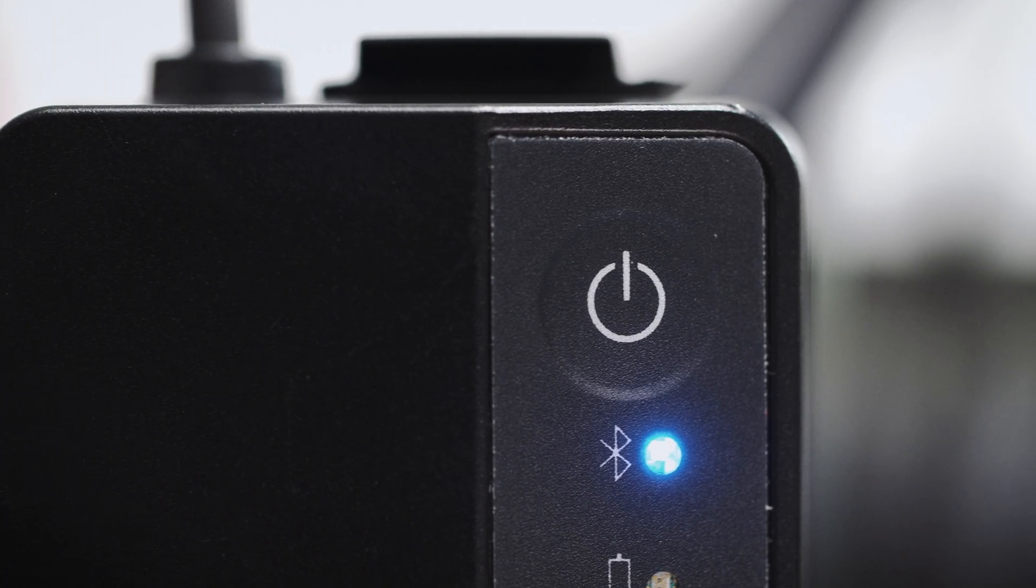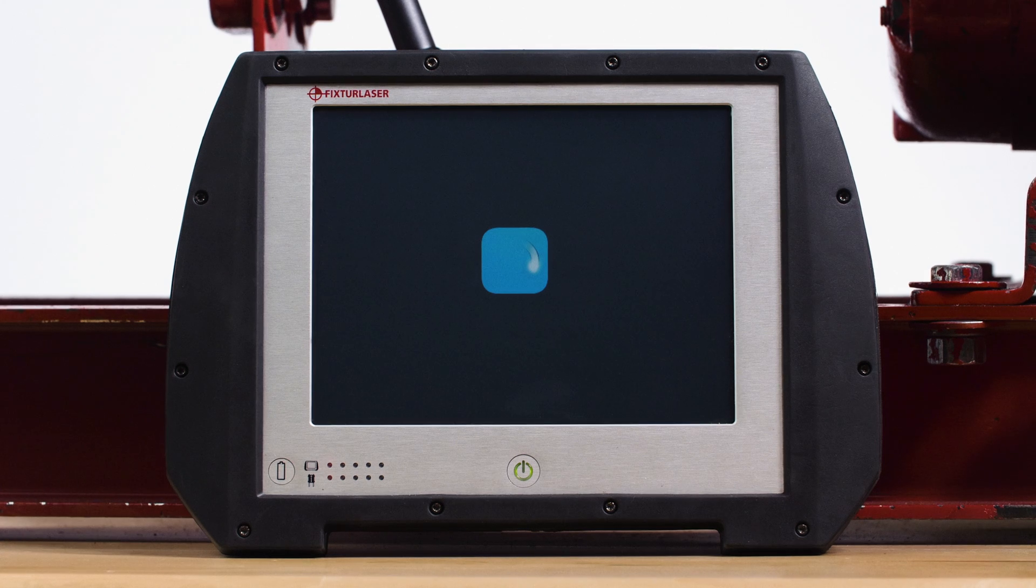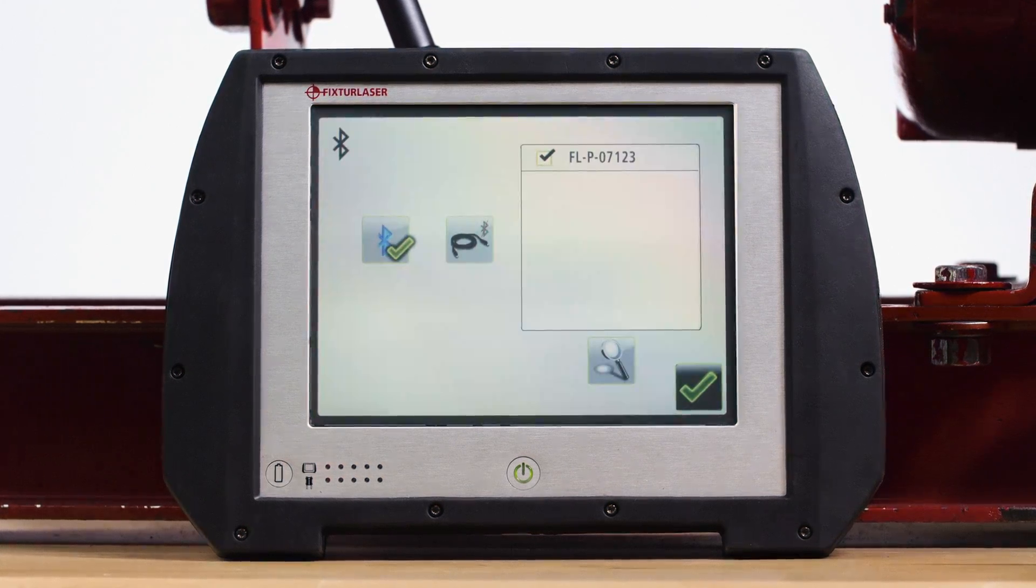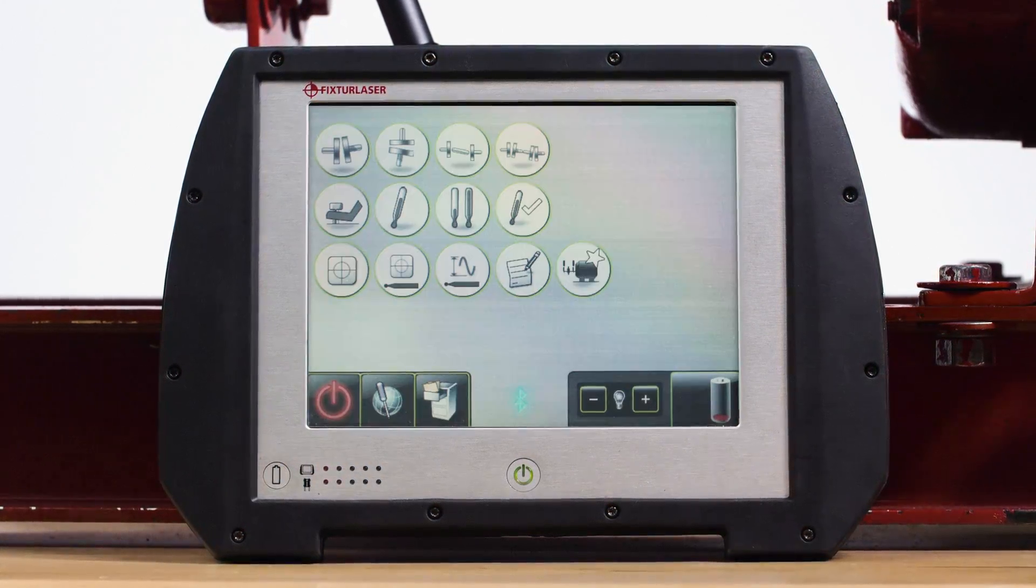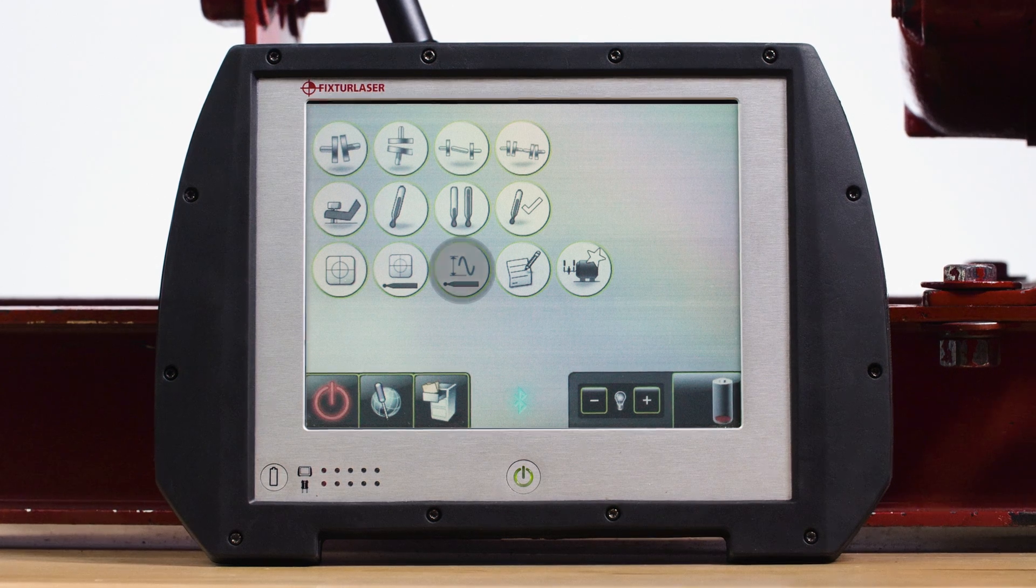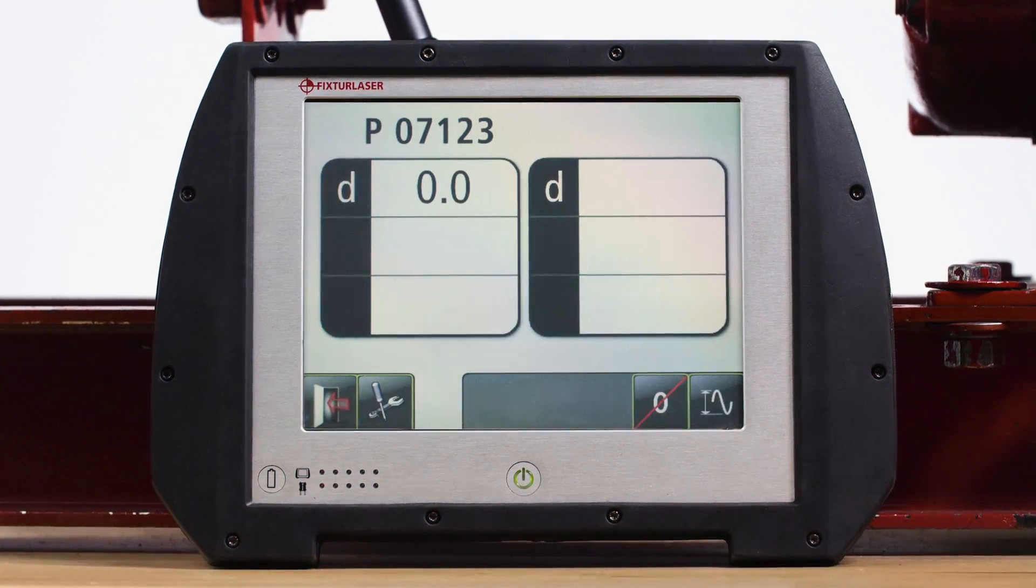The probe connects wirelessly via Bluetooth to the Fixture Laser NXA Laser Shaft Alignment Tool. The NXA has software routines that work with the sensor to detect and measure runout and pipe strain.